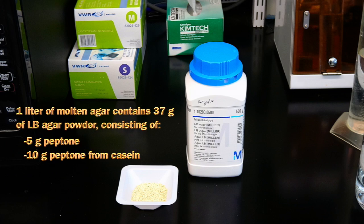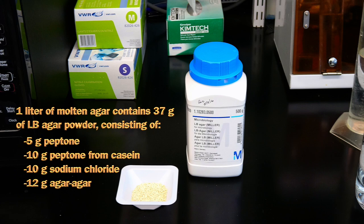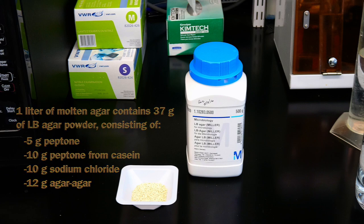10 grams of peptone from casein, 10 grams of sodium chloride, and 12 grams of agar agar. These items can be bought pre-mixed or you can buy each separately. We prefer to buy them pre-mixed to save time. This composition will make 1.2% agar plates.